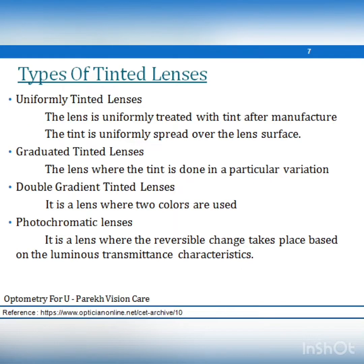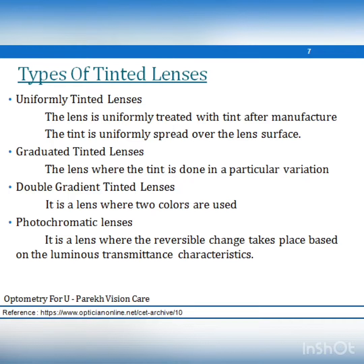Tinted lenses are classified as follows: a uniformly tinted lens has dye evenly spread over the entire surface. In a gradual tint, the intensity is greater at the top and reduces as we move down. Double gradient tinted lenses use a combination of two colors covering the complete lens surface. In a photochromic lens, the lens darkens on exposure to UV rays and clears on removal of UV.